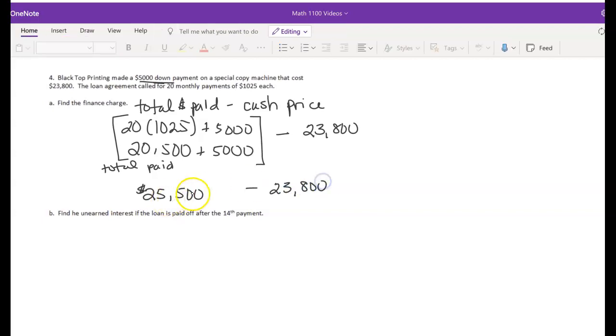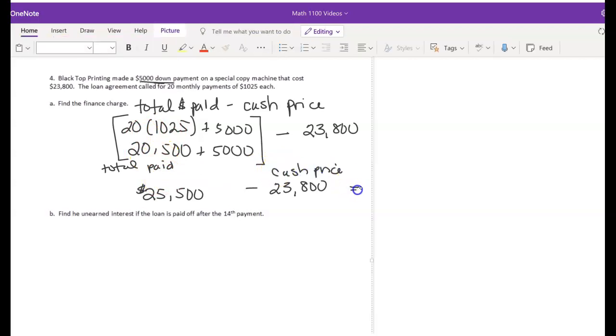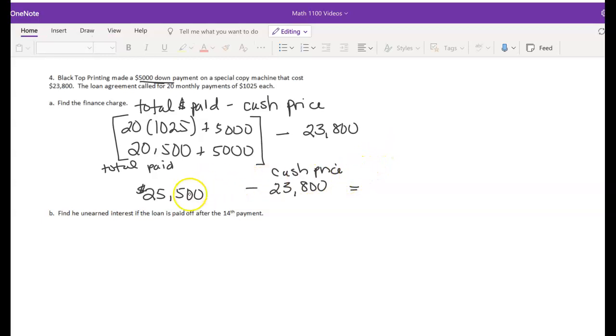Minus that cash price that we identified earlier, $23,800. So the difference between the total amount of money paid, the down payment and all payments together, and the cash price is the finance charge. And the finance charge in this case is going to be $1,700.